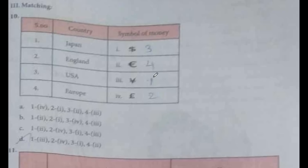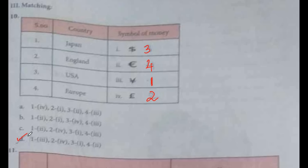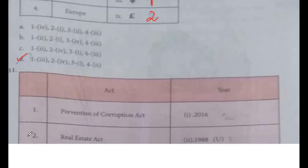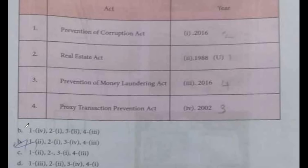Next, question 10 is a matching exercise. Japan matches with Yen. England matches with Pounds. USA matches with Dollars. And the fourth is Euros. The order of matching is 3, 4, 1, 2. Option D.